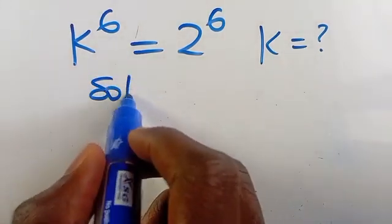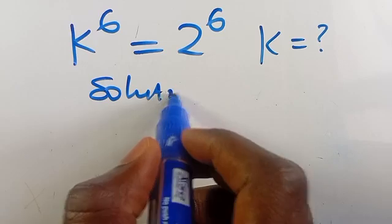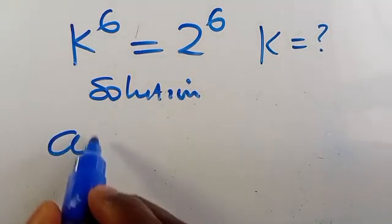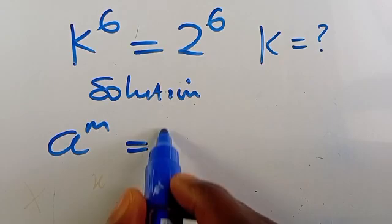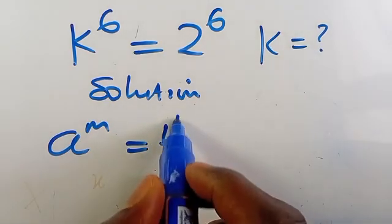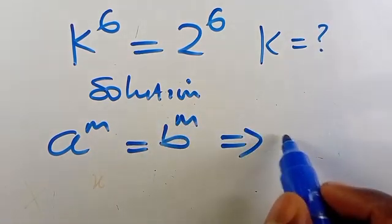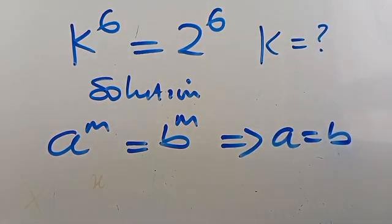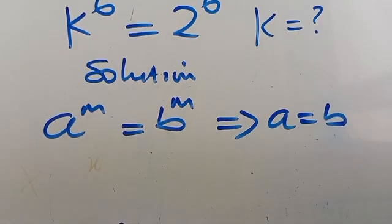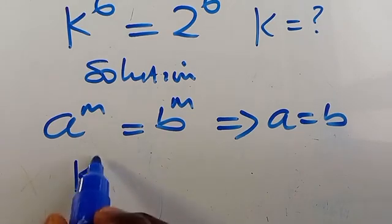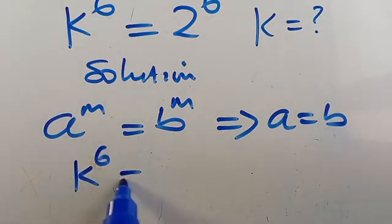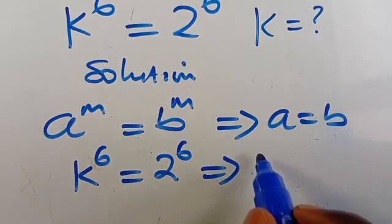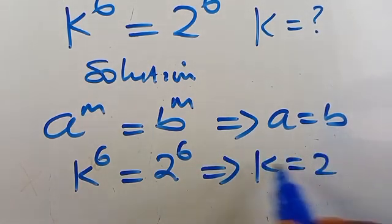Recall, let's have the solution from here. When we have a to the power of m equals b to the power of m, this implies that a equals b. So from here as well, we have k to the power of 6 equals 2 to the power of 6. This implies that k equals 2.